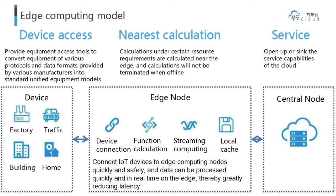The edge node can connect IoT devices to edge computing nodes quickly and safely. Data can be processed quickly and in real-time on the edge, thereby greatly reducing latency. The service layer has also opened up and synced the service capabilities of the cloud.